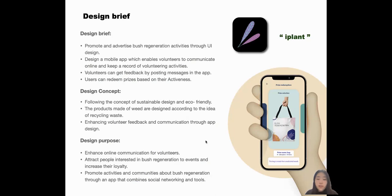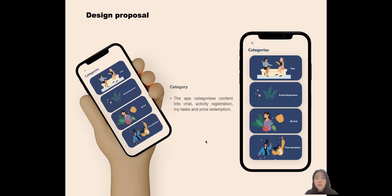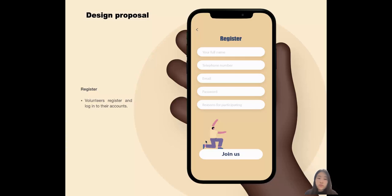This is the design framework of iPlant. Users can enter different sections in the application from the category screen. This is the registration screen, where users can register and link their account to join an organization.